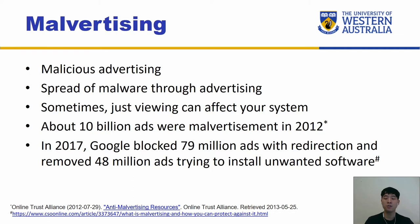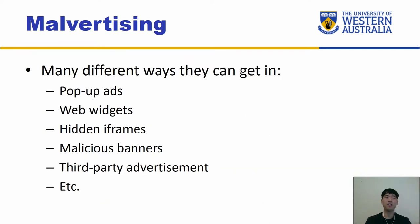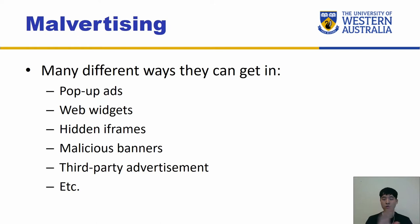So we still have to be careful and implement detection mechanisms and protections. Malvertising can get into our system in various ways, including pop-up ads, web widgets, hidden iframes, malicious banners, third-party advertisements, and so forth — essentially any advertising channel can have malware attached to it.